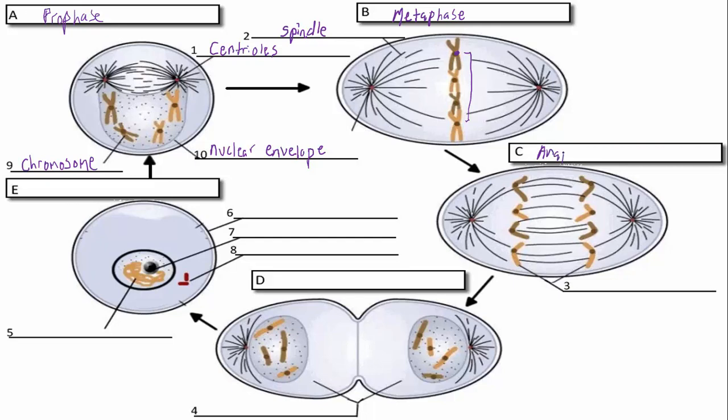Anaphase. And this is where they start pulling the chromosomes apart. So here, we're not pointing to the whole chromosome. We're pointing to what's called the chromatid. So this is the chromatid. And this brings us to the next phase.